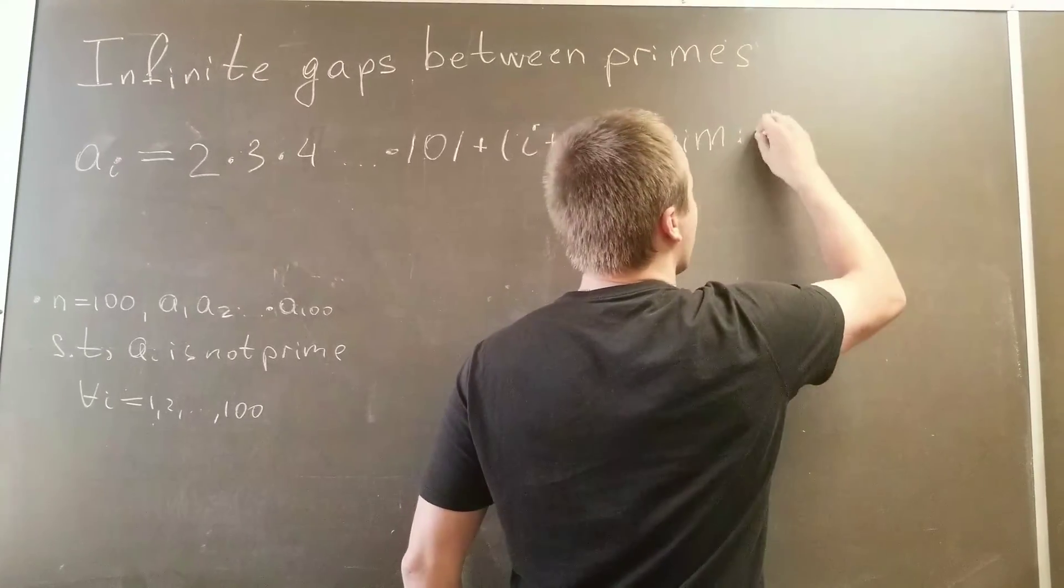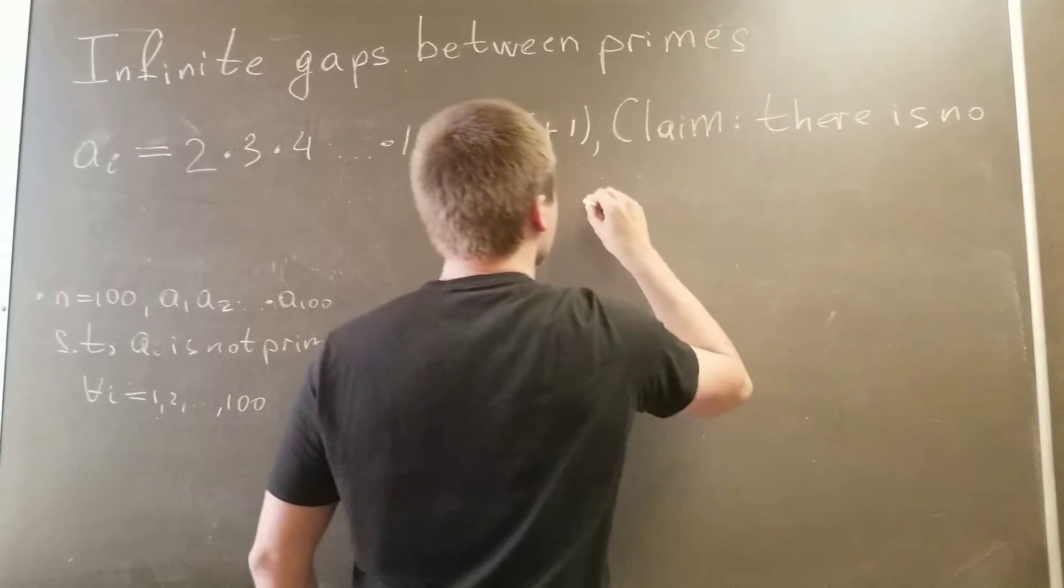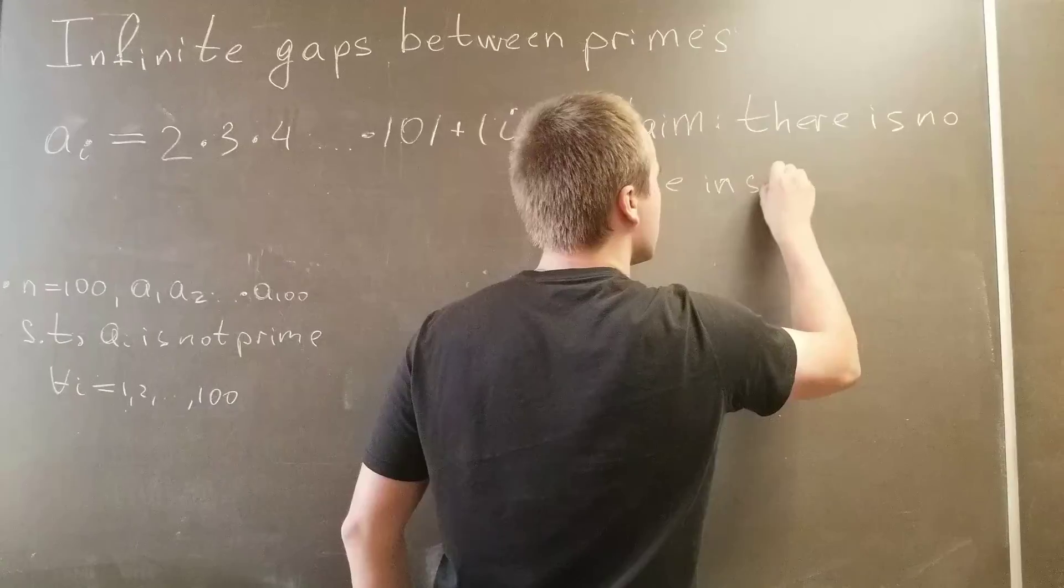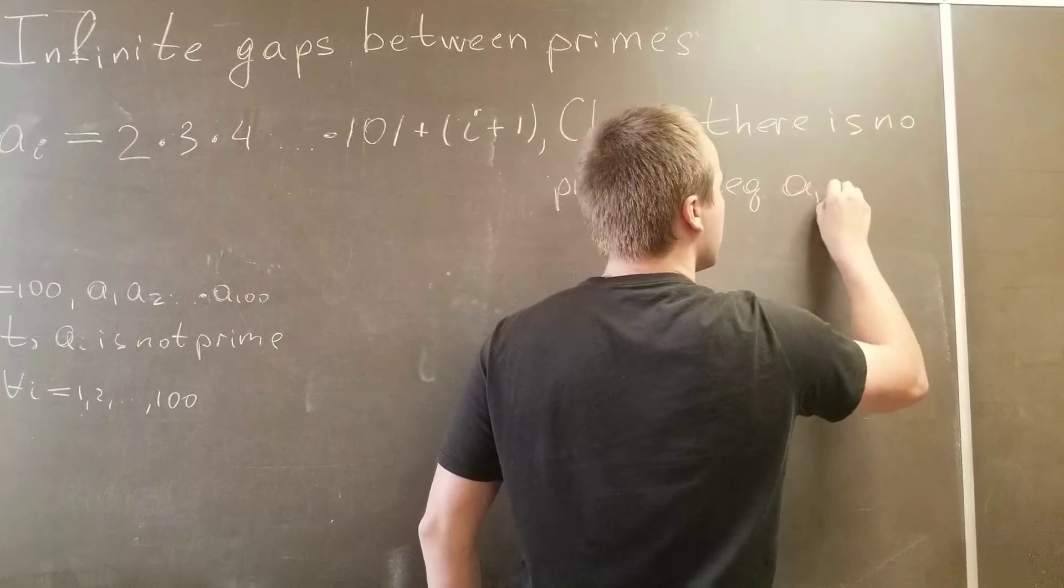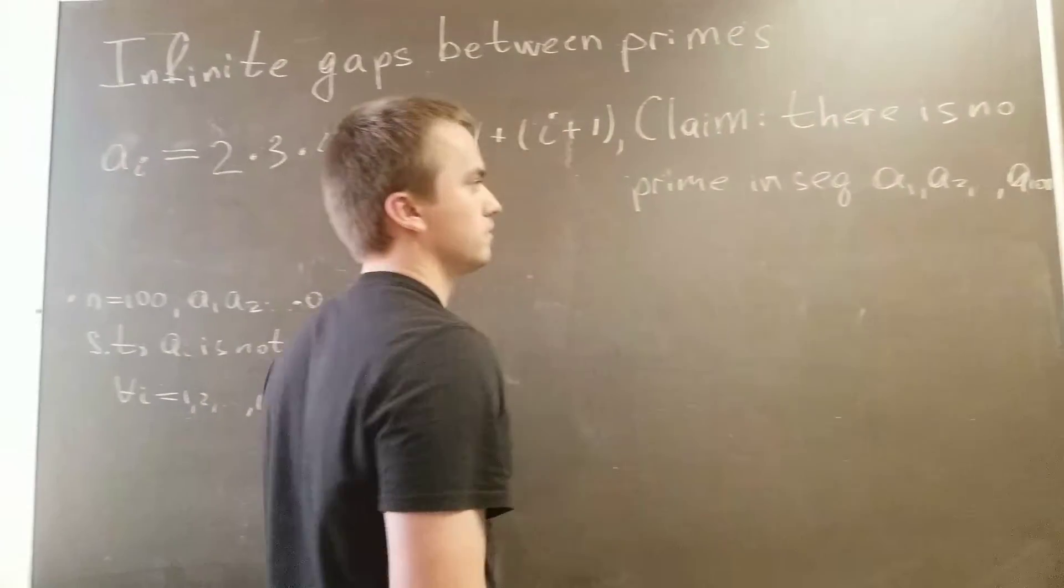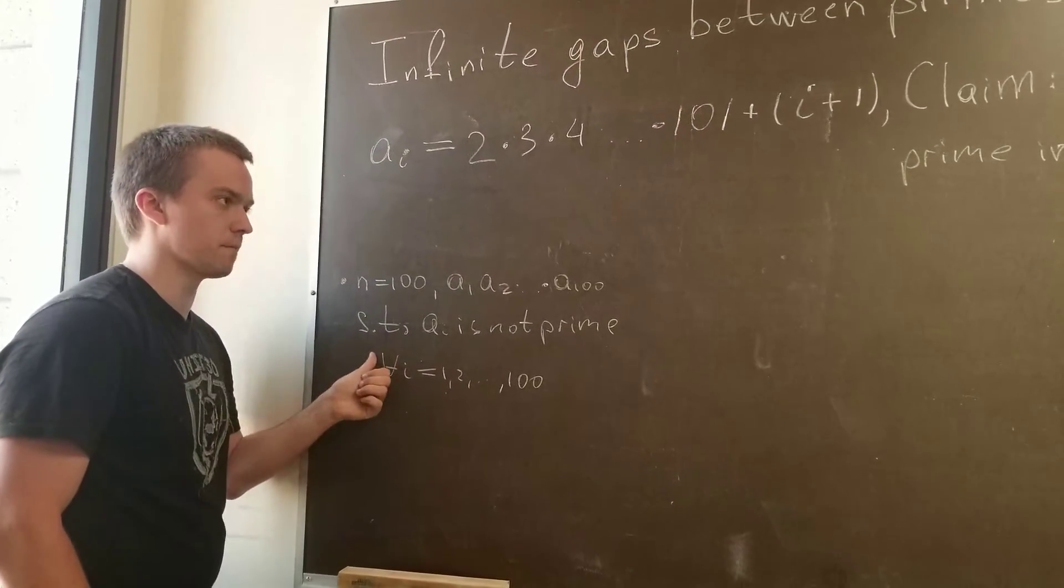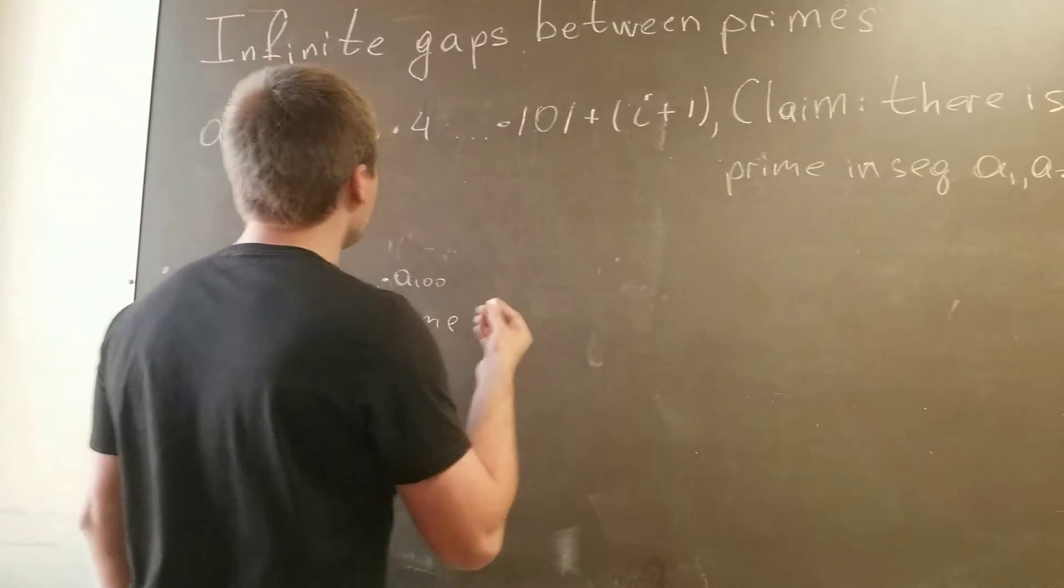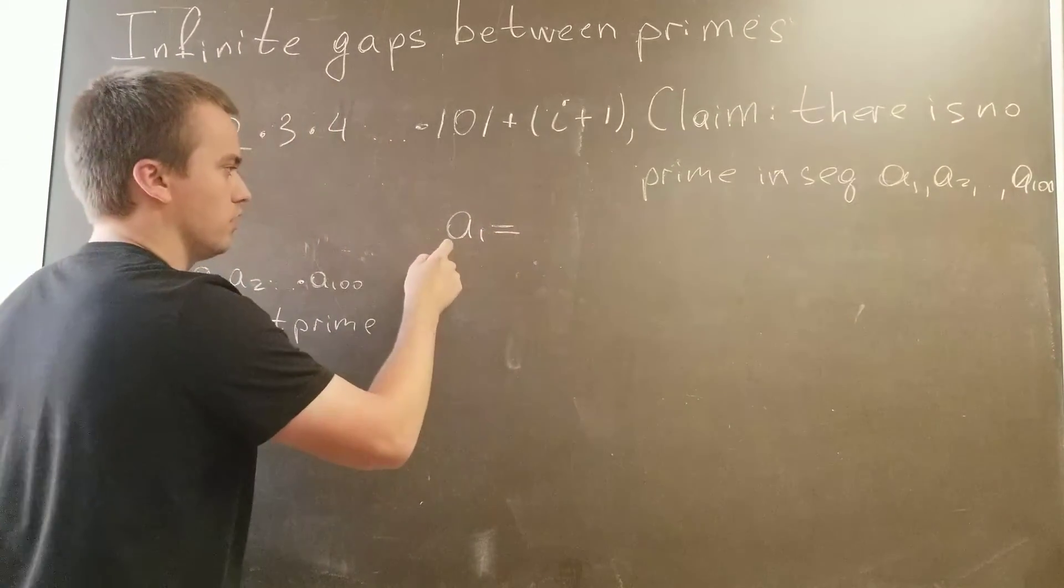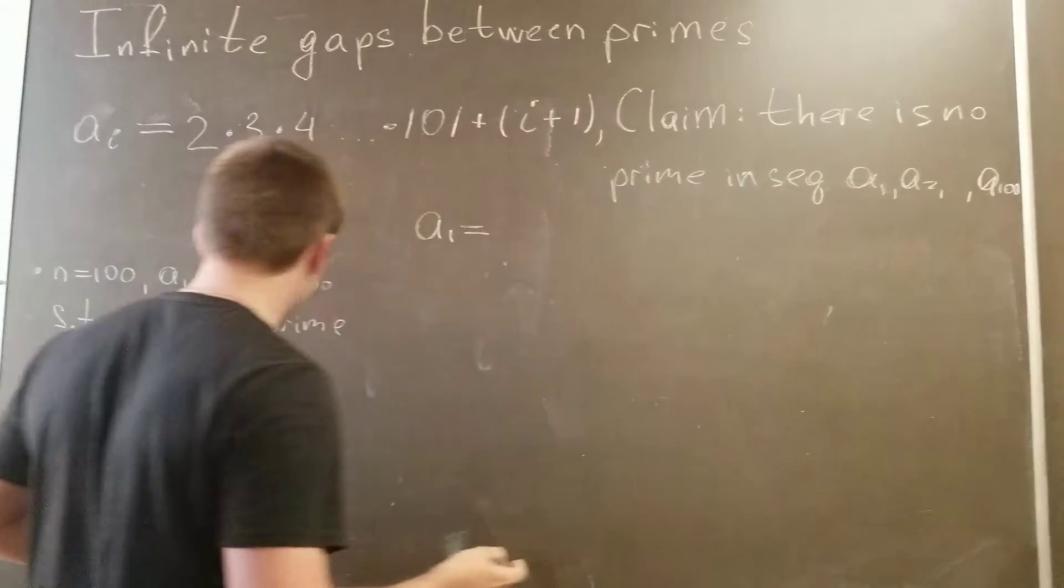So I'm going to construct such a sequence, and for this sequence my claim is that there is no prime in sequence a_1, a_2, up to a_100. Let's show this. One of the easiest ways to show this is to show what is a_1, because basically on the a_1 and a_2 example you're going to see why this is true for any a_i where i changes from 1 to 100.